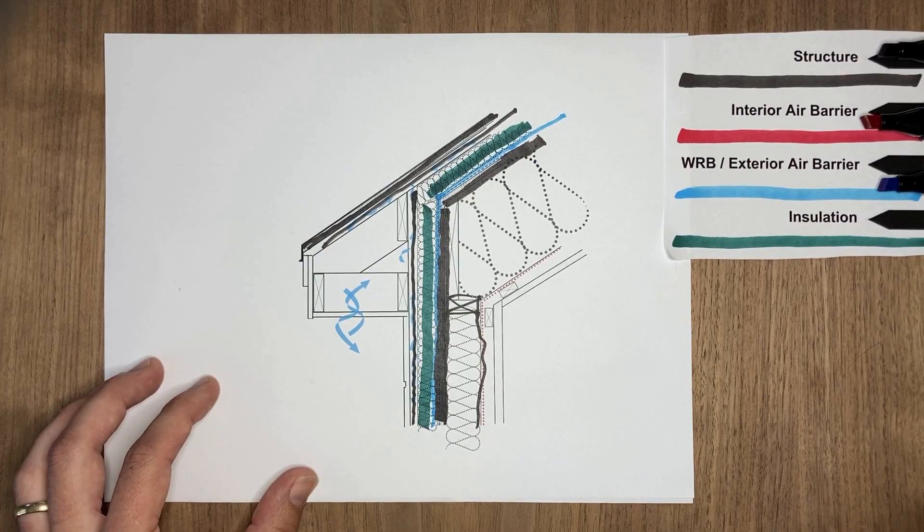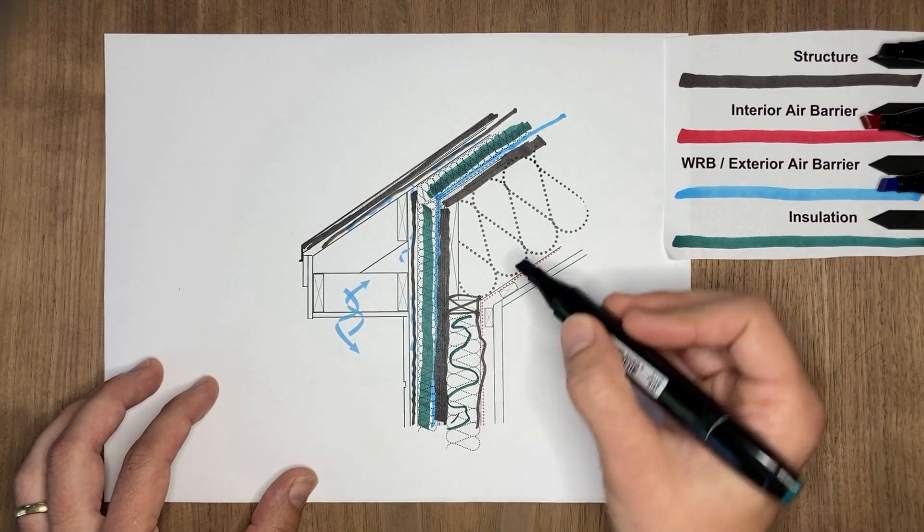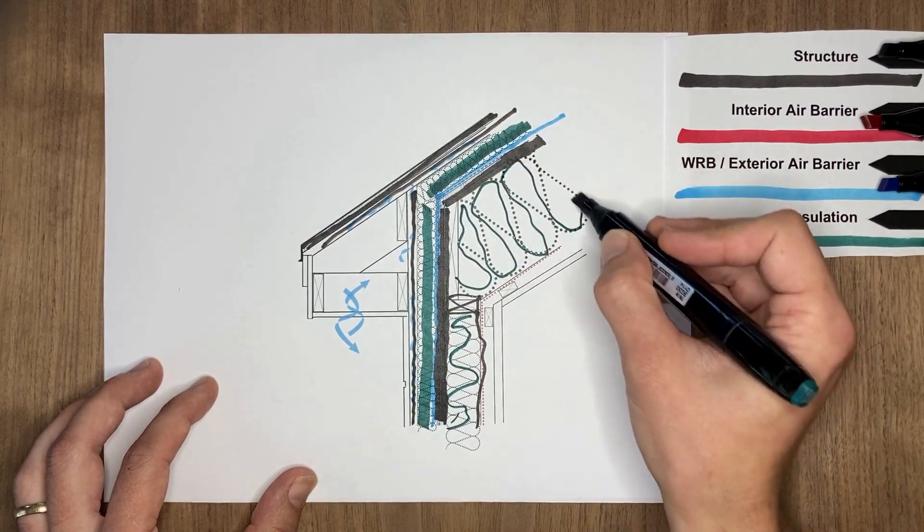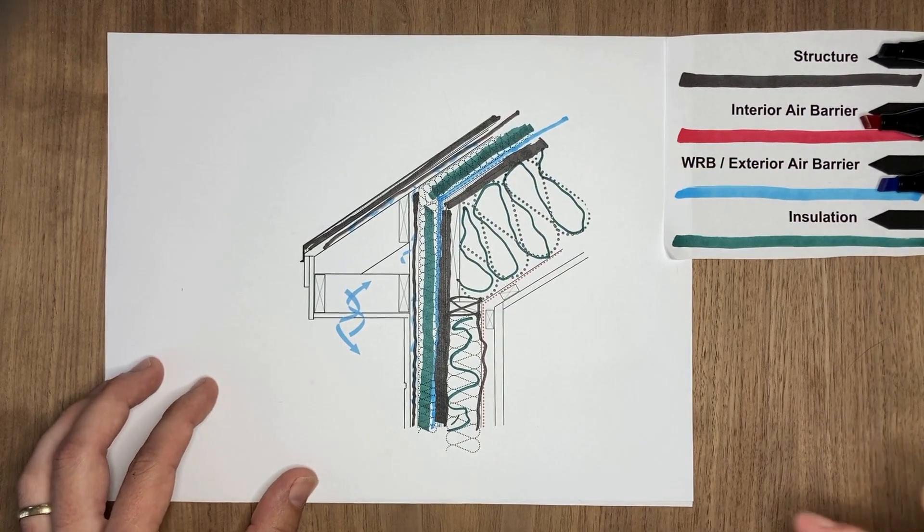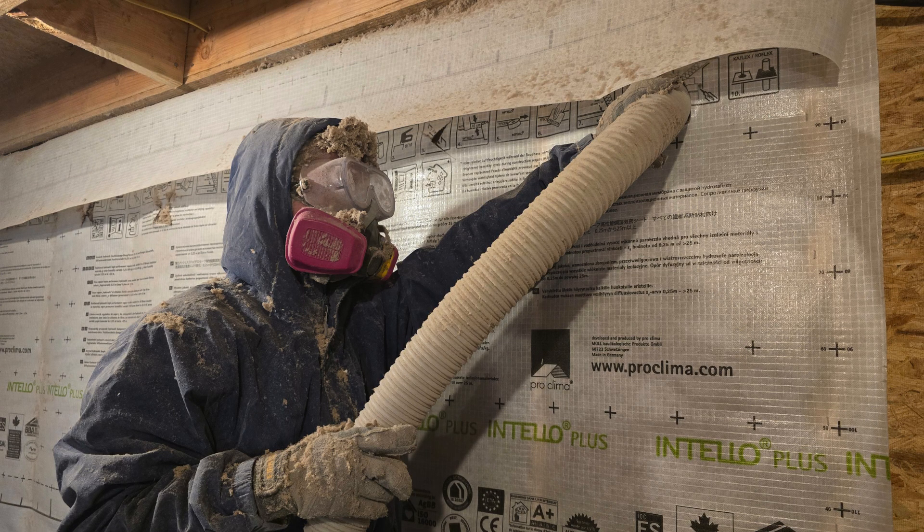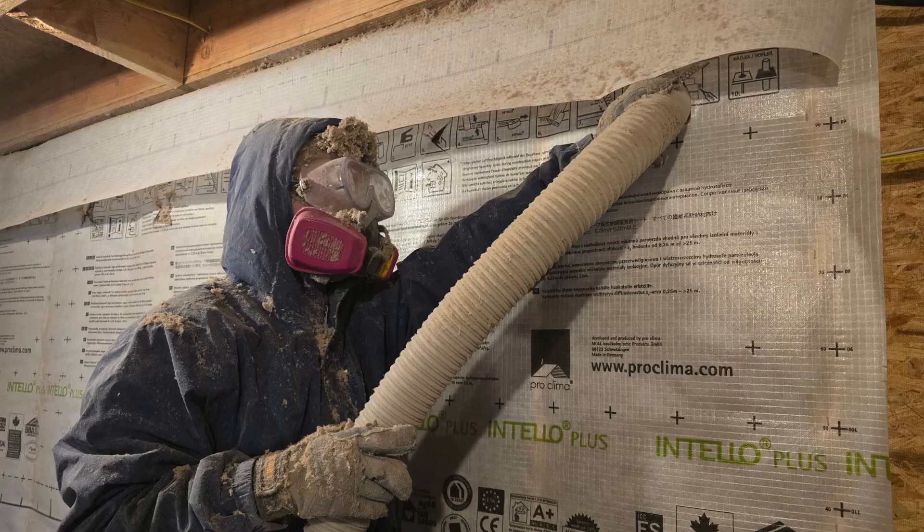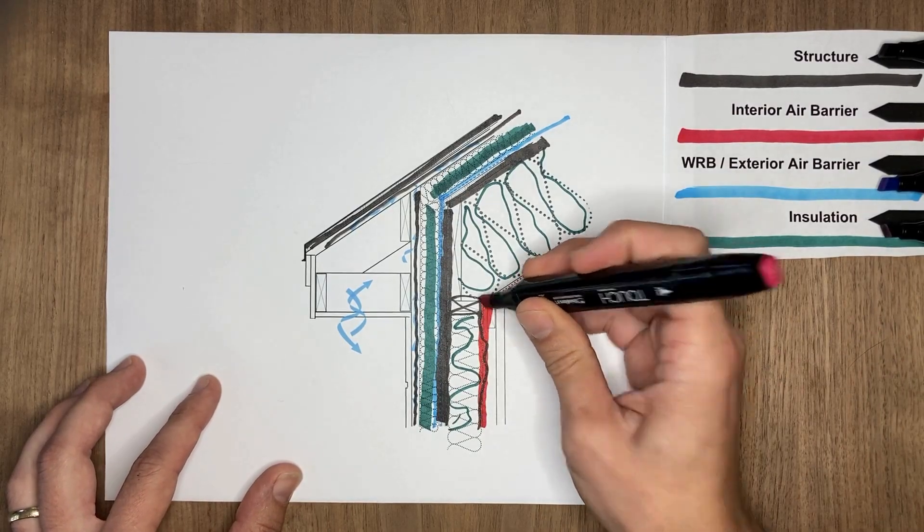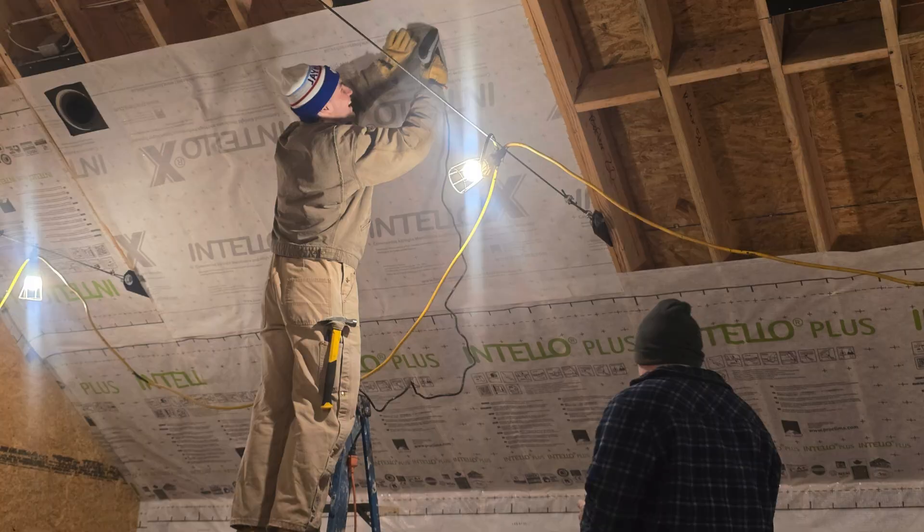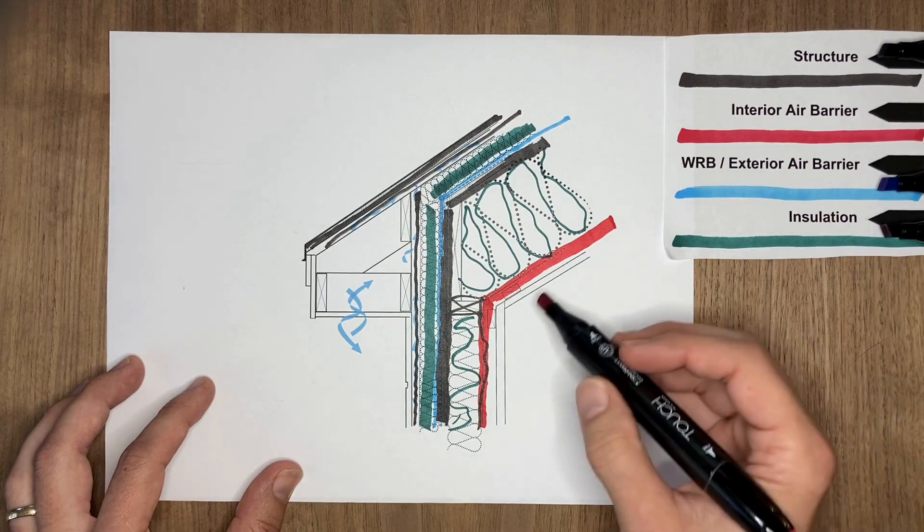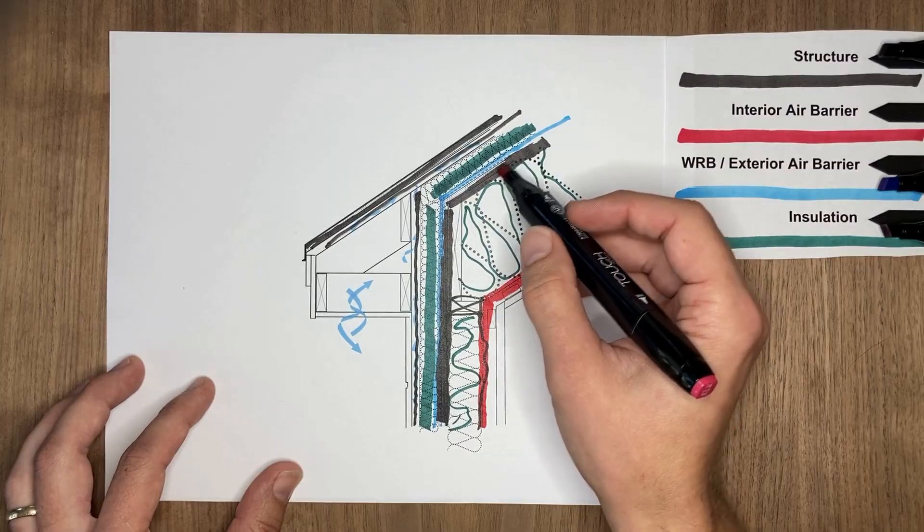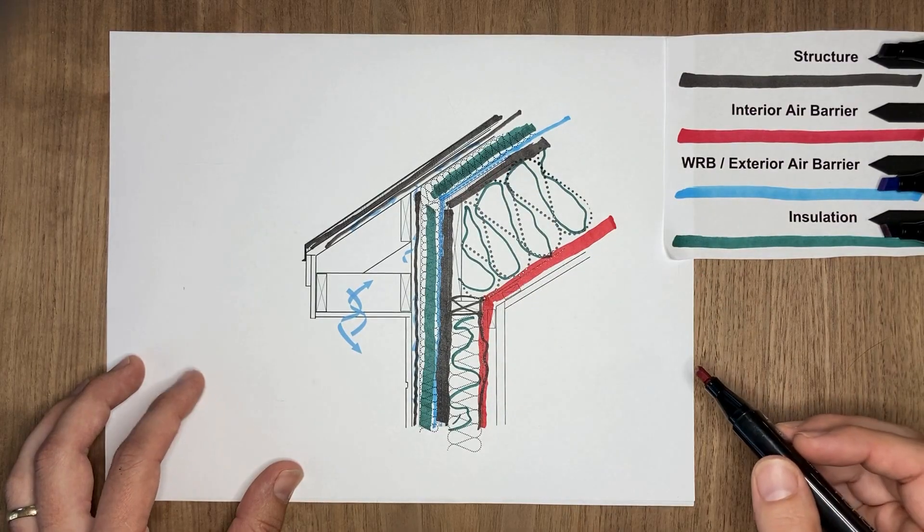So on the interior side we can insulate with some type of bat or blown in, something vapor permeable, maybe a mineral wool bat or a dense pack cellulose that's between the stud cavities. And then inboard of that we have our interior air barrier that is vapor variable, the Intello Plus or the Intello X membrane. This is keeping the conditioned air in the conditioned space and not letting it move through where it might condense on the backside of that sheathing.